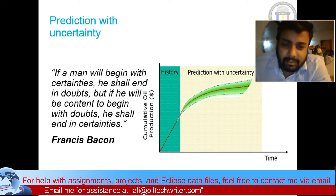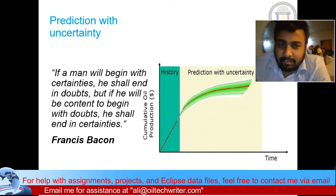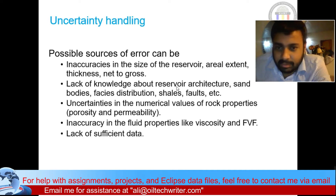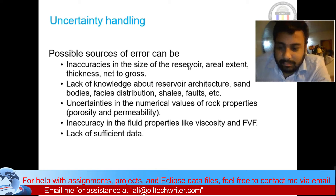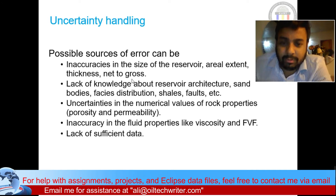There is always uncertainty in reservoir simulation. For example, in some fields in the Belgian Kurdistan region, water production was not expected, but after a few years water appeared in the wells. Sources of uncertainty include the size of the reservoir — you may expect one kilometer but the actual extent could be two kilometers — as well as aerial extent and thickness.